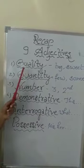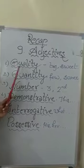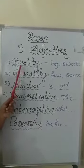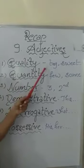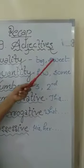First one, adjective of quality. This adjective asks the questions, what kind or what type of the word is. Examples: big, sweet, cold, hot, etc.